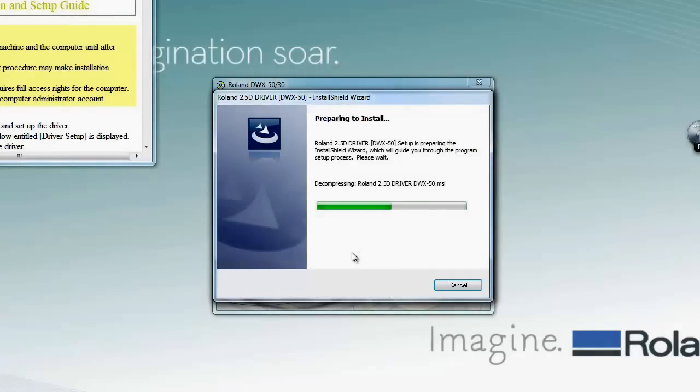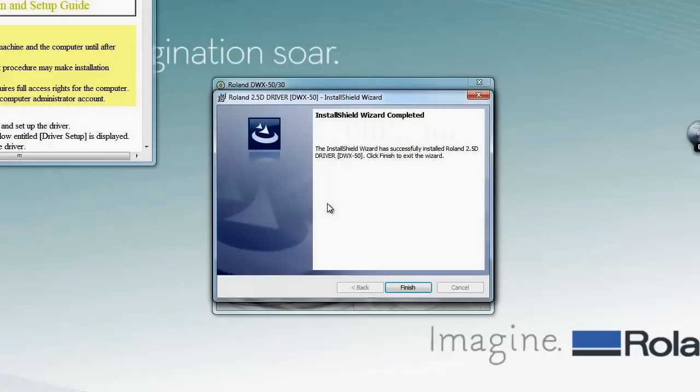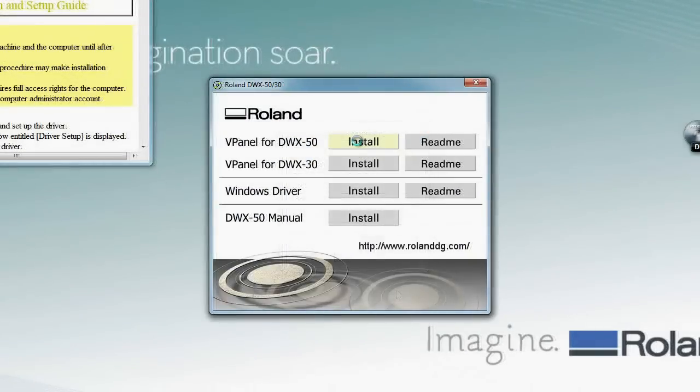At this time, the unit should be powered off and the USB cable should not be plugged in. Once you finish the setup wizard for the driver, your next step is going to be to install the v-panel or virtual panel for the DWX50.